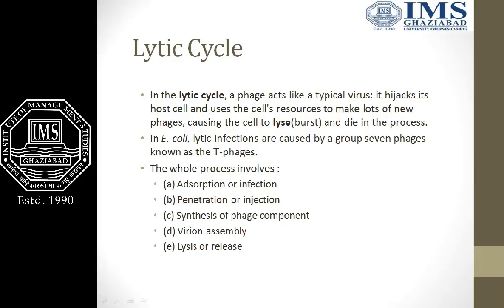In the Lytic Cycle, phages generally act like a typical virus. They hijack the host machinery or host cell and use its host resources to make a lot of new virions. We will call phages causing the cell to lyse, burst, and die in the process. These cycles we can generally see in E. coli bacteria, where infection is caused by T-phages. The cycle involves five steps: adsorption or attachment, penetration or injection, synthesis of phage components, virion assembly, and lysis or release.